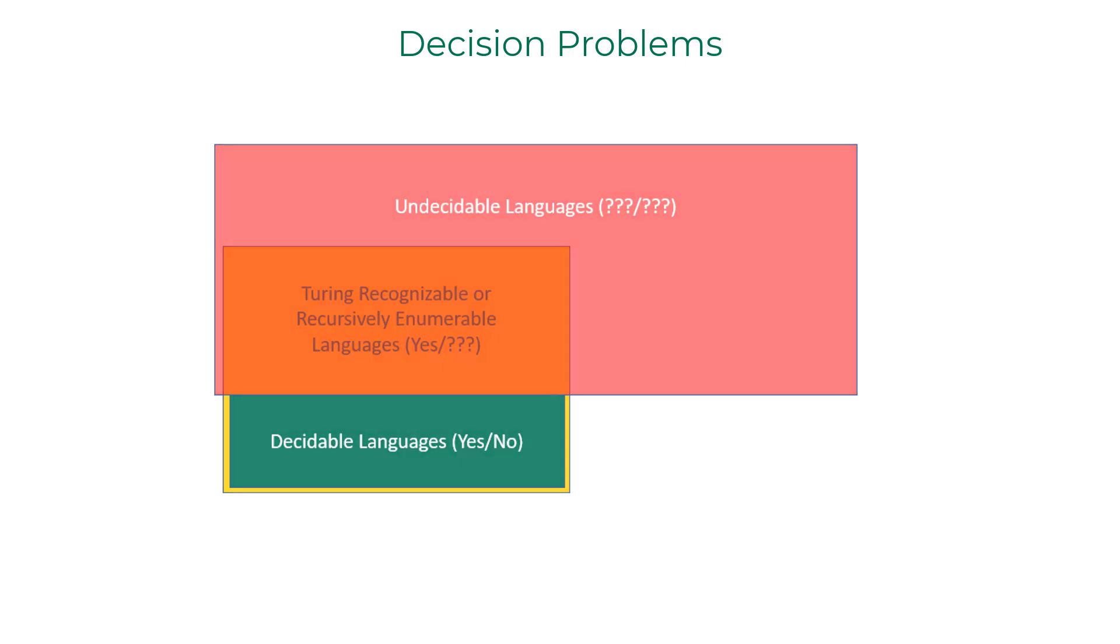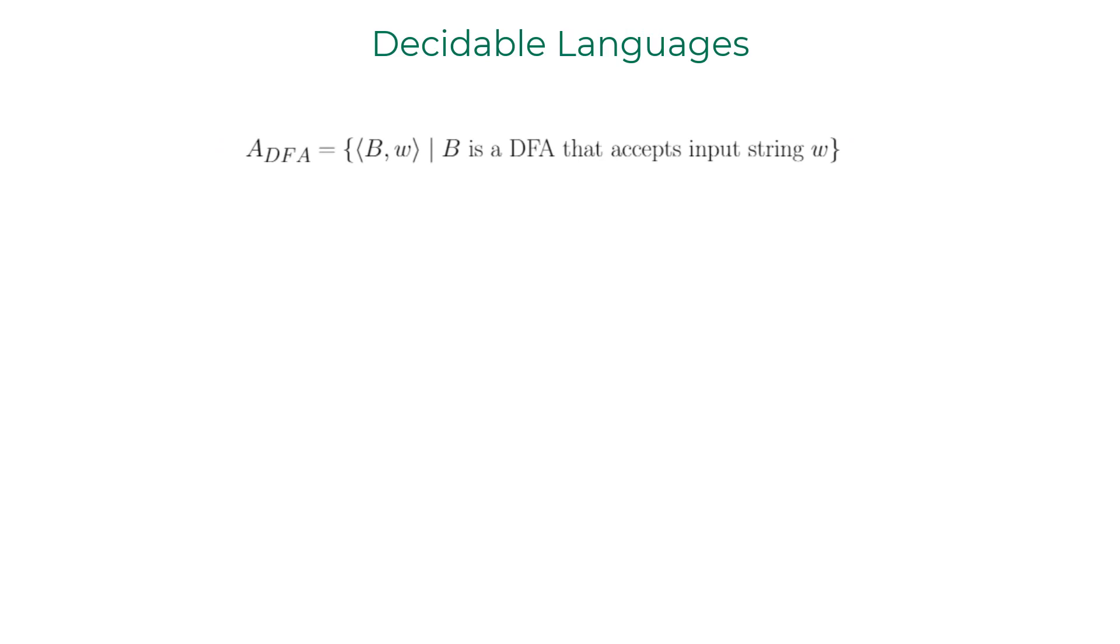Let us look at an example for a decidable language. A_DFA is the language with strings that are encodings of the formal descriptions of all the possible DFAs in existence and the corresponding words that they accept. We know that a DFA can be defined by a five tuple.